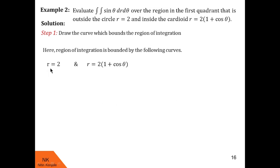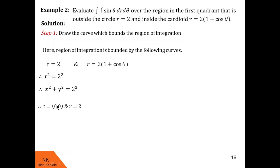To find the center and radius of r = 2, we square both sides: r² = 4. Using r² = x² + y², we get x² + y² = 4, a standard circle centered at the origin with radius 2. The other curve, r = 2(1 + cosθ), is a cardioid pointing towards the positive x-axis.